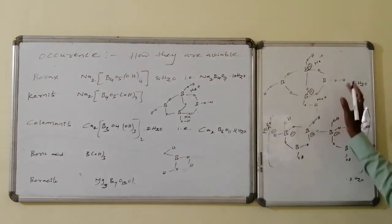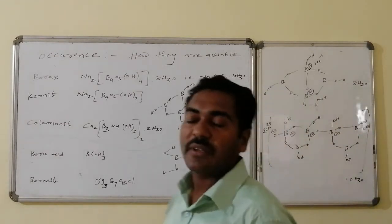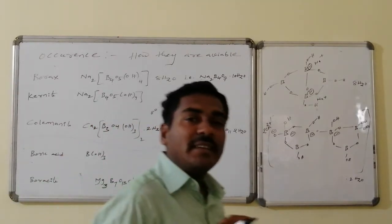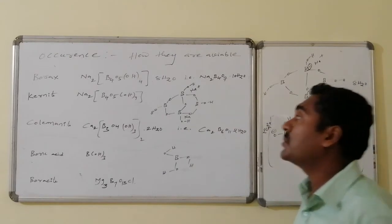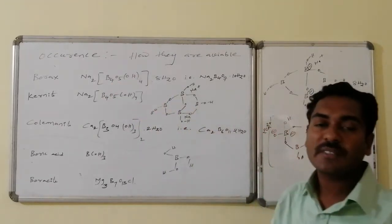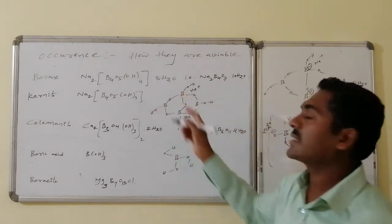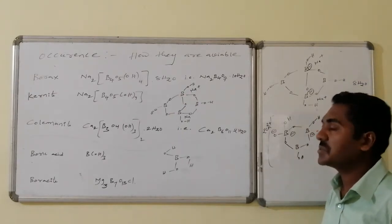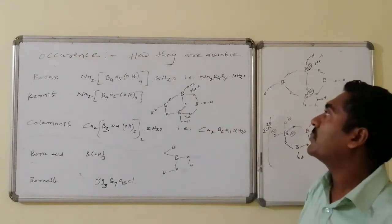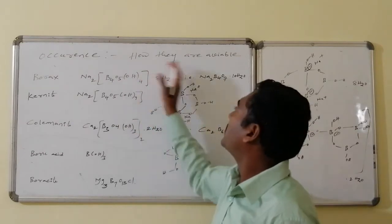The total formula for Borax is Na₂B₄O₇·10H₂O. An easy way to remember it is: Na₂B₄O₅ followed by (OH)₄ — since there are 4 borons — followed by 8H₂O outside the structural representation. Another important variety of Boron occurrence is Kernite, which has the formula Na₂B₄O₅(OH)₄ without water molecules.